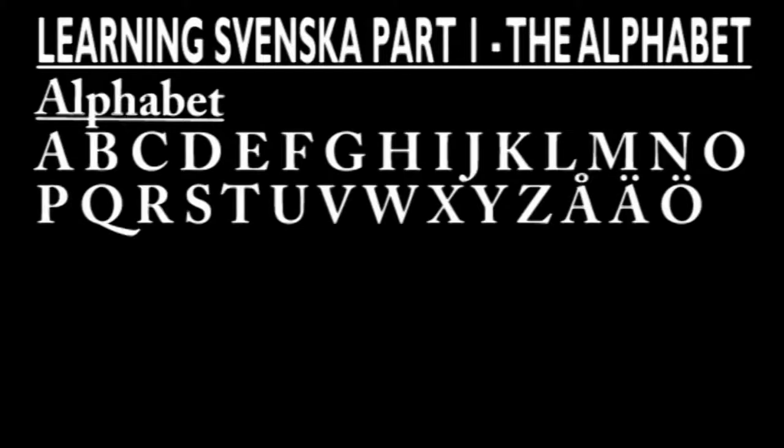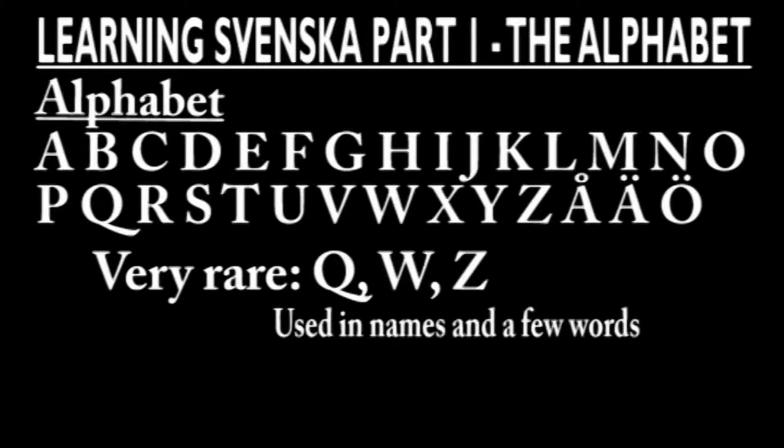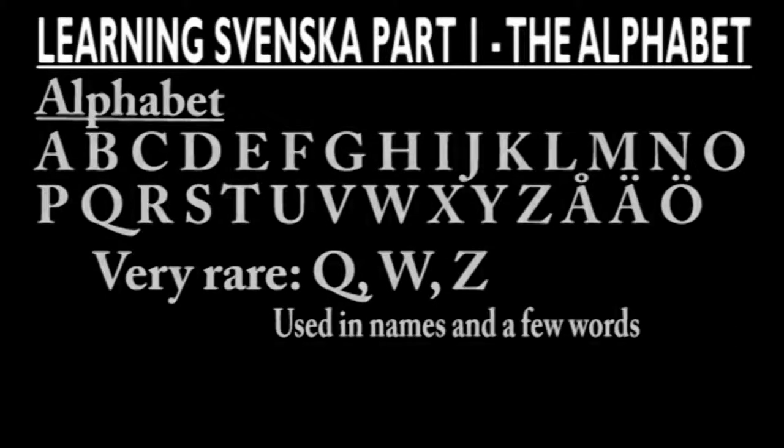First off I want to start with the very basic: the alphabet. The Swedish alphabet has 29 letters, although some — like Q, W, and Z — are almost never used except in names and a very few words.